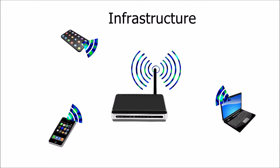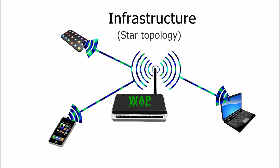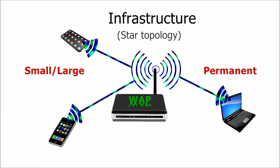Currently, the most common mode in wireless networking is called infrastructure. This design is similar to that of the star topology — at the center is a wireless access point. This mode can be used in small and large networks and is ideal for long-term use.